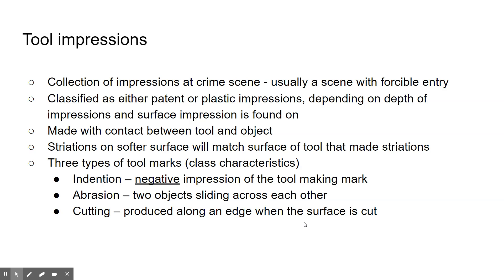There are three types of tool marks and they're considered class characteristics applied to a general class of tool. Indentation marks are a negative impression of the tool — as if it got stabbed into the surface. Abrasion marks occur where the tool slid across the surface and made a scratch. Cut marks occur when the edge of the tool — like a knife or scissors — made the mark.